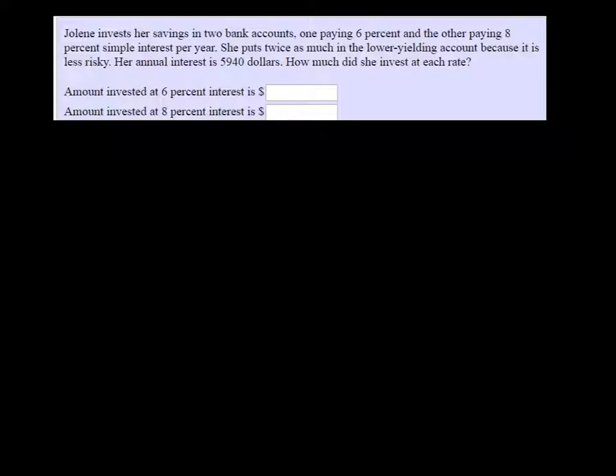All right, Jolena invests her savings in two bank accounts, one paying 6% and the other paying 8% interest per year. She puts twice as much in the lower yielding account because it is less risky. Her annual interest is $5,940. How much did she invest at each rate?